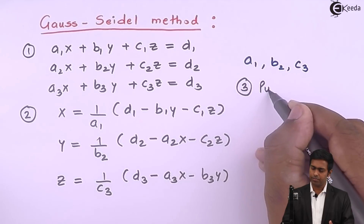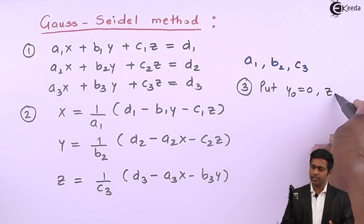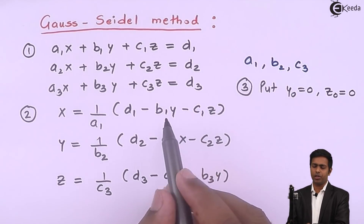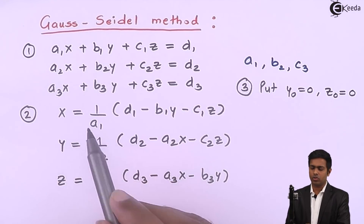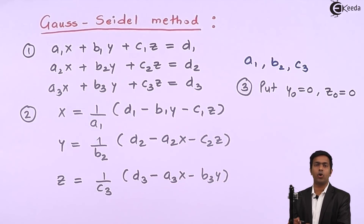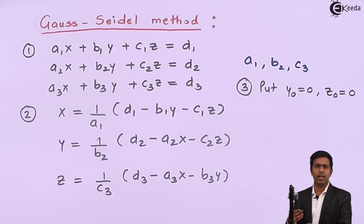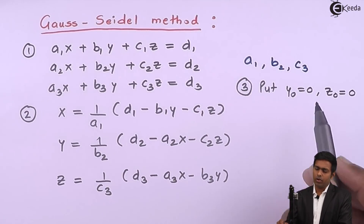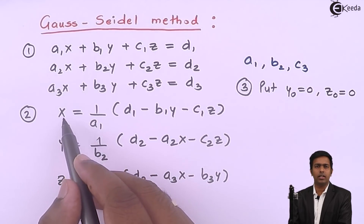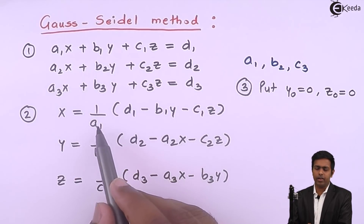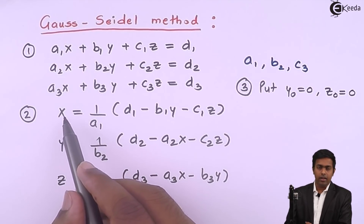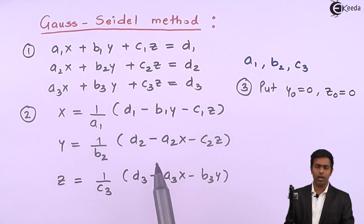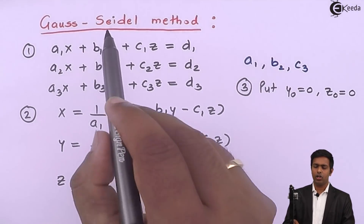We put y₀ = 0 and z₀ = 0. By substituting these into the first equation we get x₁ = d1/a1. We label iterations: the initial roots are 0, then x₁, y₁, z₁ for the first iteration, x₂, y₂, z₂ for the second, and so on. As soon as we get any new value of x, that is x₁, we immediately use it in the next equation — this is the key feature of Gauss-Seidel.